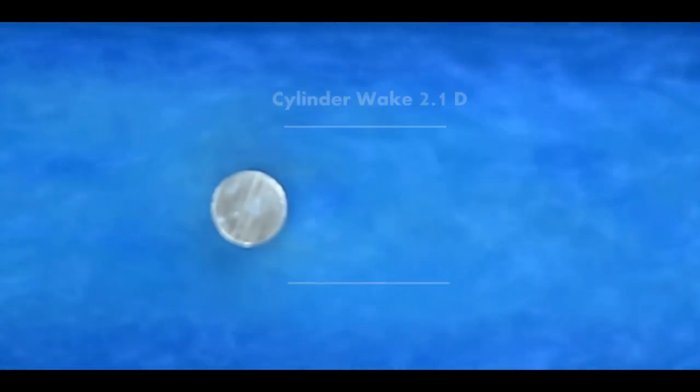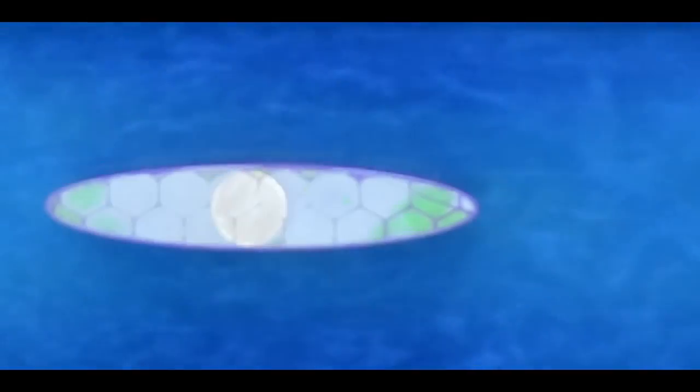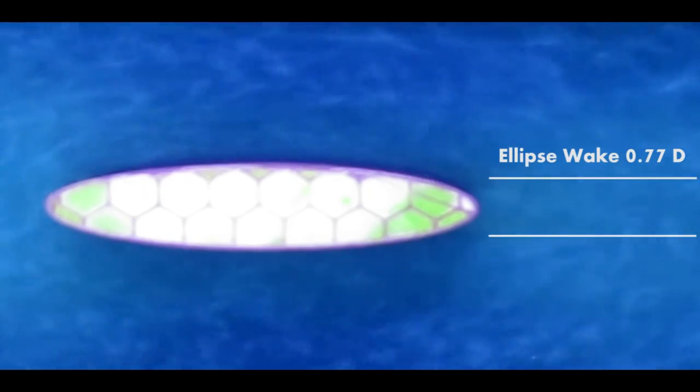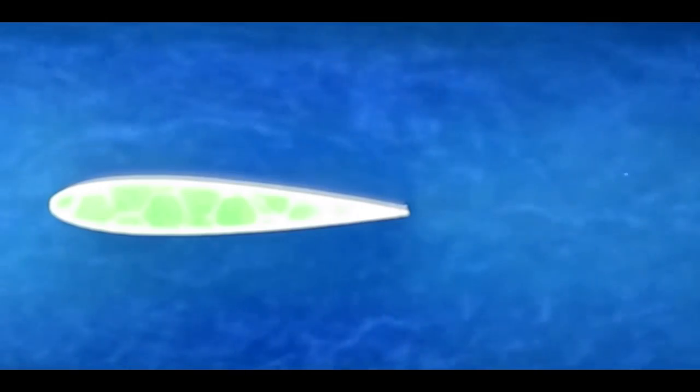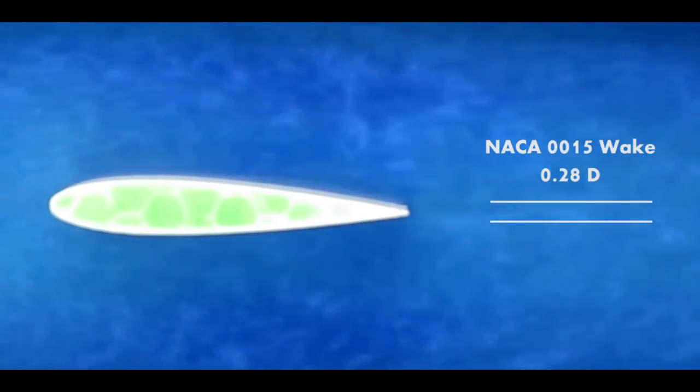Let's take a look at the wake widths occurring on these bodies. Here we have the cylinder wake width—I just crudely measure at 2.1 d. Here is the ellipse, wake width about 0.77 d, thinner than its thickness. Finally, the NACA 0015, wake width about 0.28 d. That's a fairly crude estimate with me looking at the video.